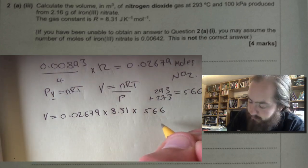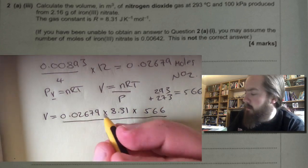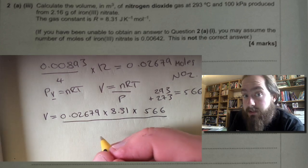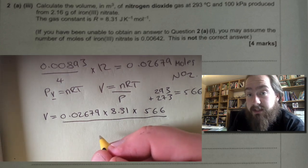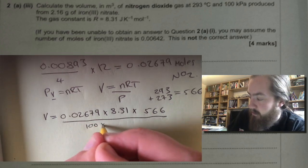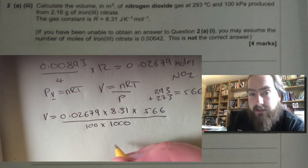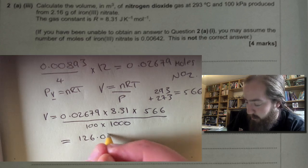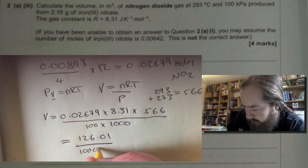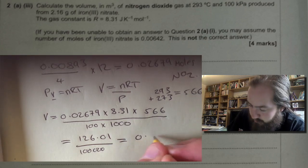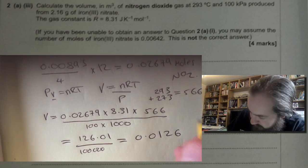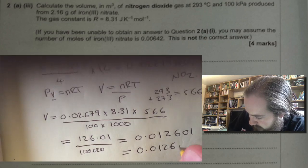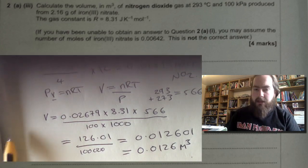So we're going to put 566 in our formula. We'll then divide that by the pressure in Pascals. So the one that's given in the question is kilopascals, which is 1000 Pascals. So instead of 100 kilopascals we're going to do 100 times 1000, and that will tell us the number of Pascals. When we simplify that we're going to get 126.01 divided by 100,000, and that will give us an answer of 0.012601, which we can round off to three significant figures of 0.0126 meters cubed. And that's our answer.